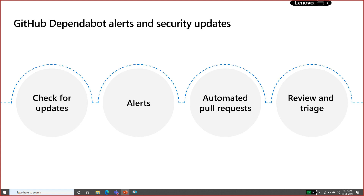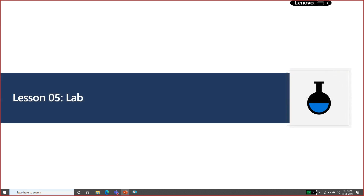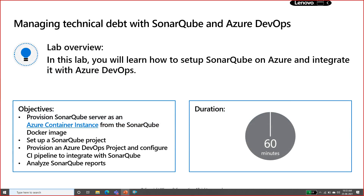GitHub Dependabot provides security alerts - it checks for updates, finds alerts, and automatically creates pull requests for review and triggers. The lab for this module will cover SonarQube or SonarCloud.